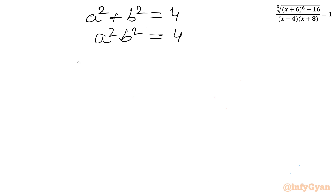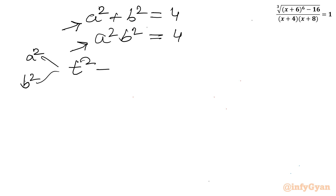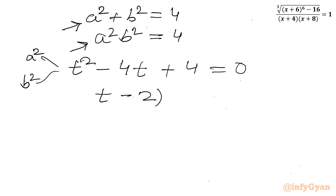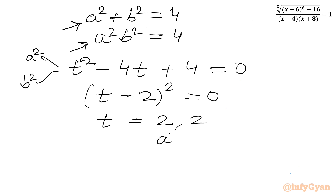I can consider a quadratic equation in t whose roots are a squared and b squared. The sum of roots is 4 and the product of roots is 4, so the equation is: t squared minus 4t plus 4 equals 0. This is a perfect square: (t minus 2) squared equals 0. So t equals 2 (a repeated root). Therefore both a squared and b squared equal 2.